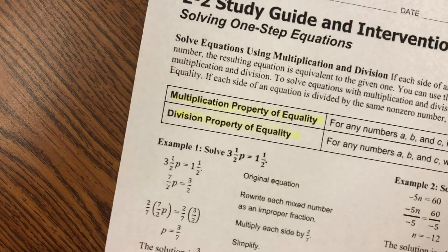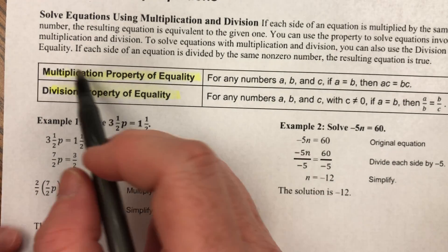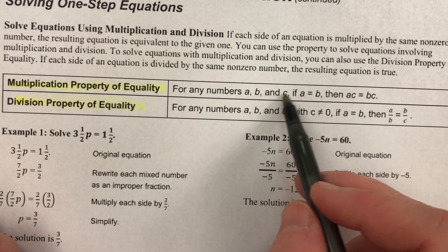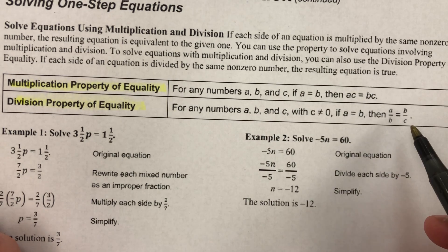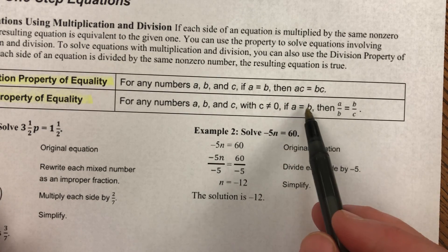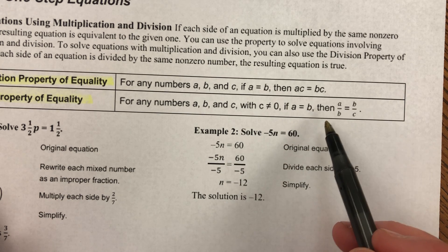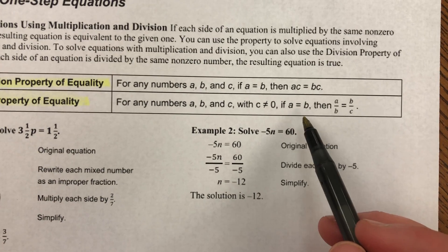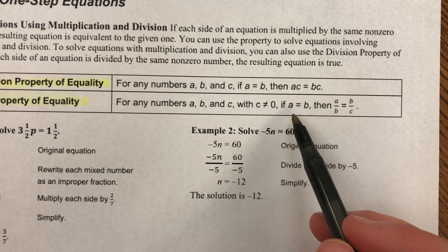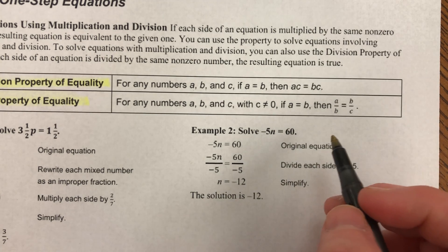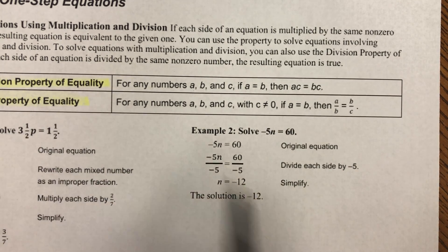We're doing the exact same thing with multiplication and division — same exact idea. The multiplication property of equality says if A and B are equal, then if you multiply A by C, you have to multiply B by the same thing. Division is the same: if I divide A by something, I have to divide B by the same thing to keep it equal. Think of it like siblings — if you give one something, you have to give the other the exact same thing to keep everything equal.